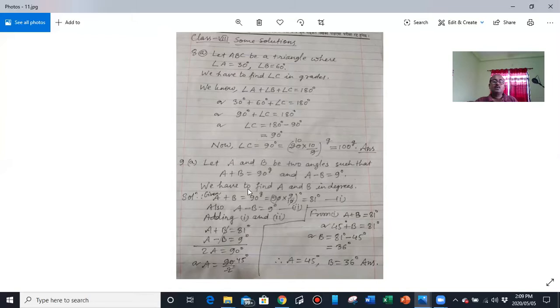Now let us see next sum, question 9A. The question says there are two angles. Their sum is 90 grade. If they are measured in degree, then their difference is 9 degree. The question is asking both angle A and angle B in degree. We have to find angle A and angle B in degree.